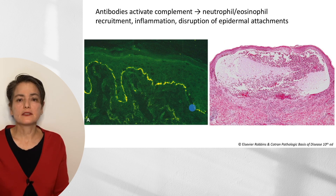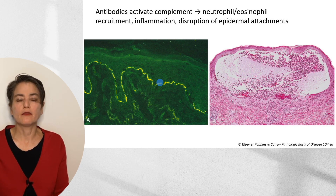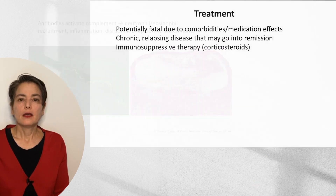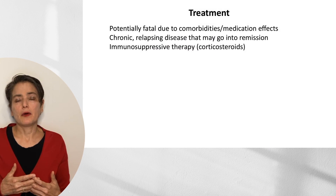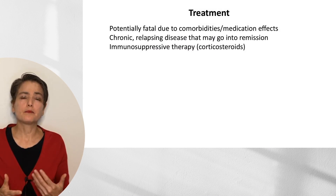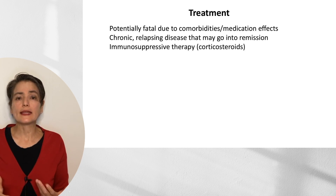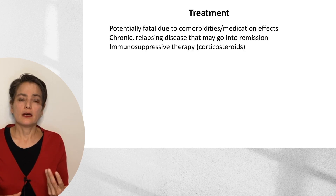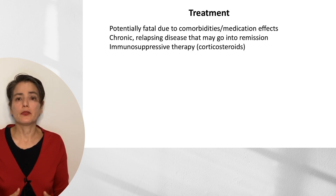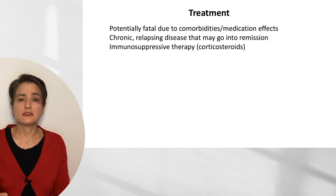The antibodies bind to hemidesmosomes and activate complement, which recruits neutrophils and eosinophils, resulting in inflammation and disruption of epidermal attachments. This disease is potentially fatal, but predominantly due to comorbidities and effects of immunosuppressant medication. The disease itself has a chronic relapsing quality, although some patients may go into remission after several years. Standard therapy is immunosuppressive therapy with corticosteroids; if very aggressive, more significant immunosuppression may be necessary.